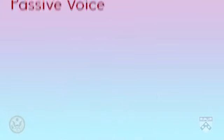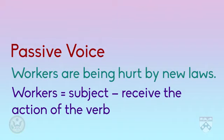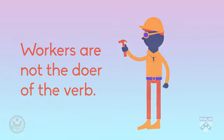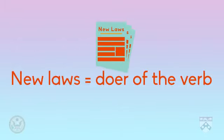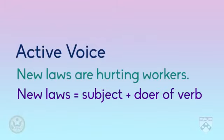Let's look at an example. Remember, we want to use present tense and active voice. 'Workers are being hurt by new laws.' This sentence is already in present tense but is in passive voice. The subject, 'workers,' are not the doer of the verb. It is clear that the new laws are doing the hurting. So we need to change the voice from passive to active by making 'new laws' the subject. We now have a sentence that is in present tense and active voice. That communicates to the audience that the action is happening now, and that they are involved in the story.